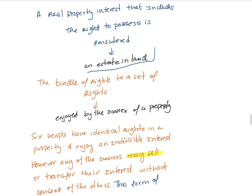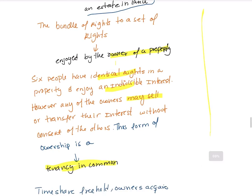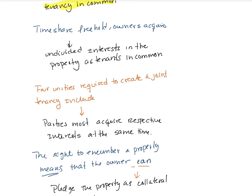The bundle of rights gives the owner the right to use the property. Six people with identical rights in a property and indivisible interest — where any of the owners may sell or transfer their interest without the consent of the others — describes a tenancy in common. Timeshare owners also acquire undivided interest in the property as tenants in common.